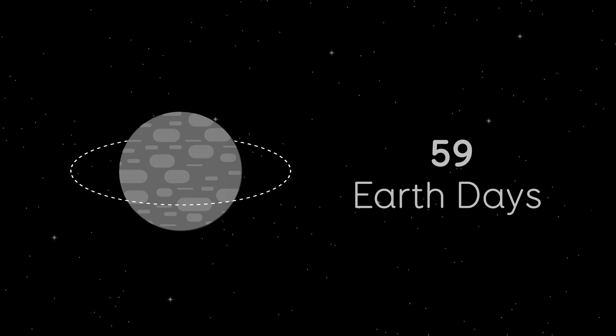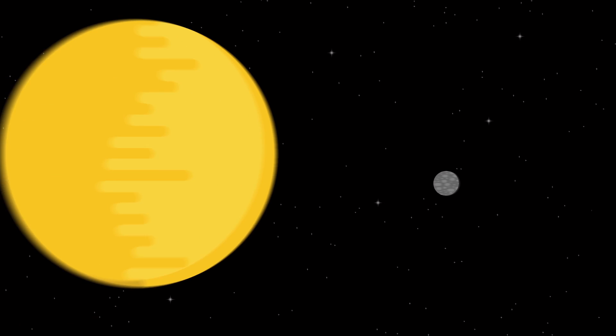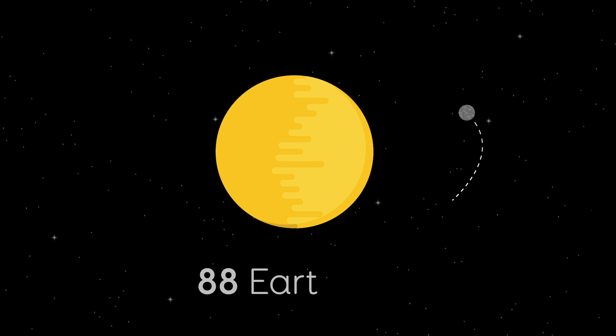Mercury takes 59 Earth days to rotate, but only 88 Earth days to whizz around the Sun.